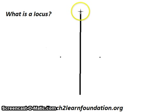You also may be asked to find the locus of points that is equidistant between two fixed points. Now, imagine that there is a line drawn between these two points, from here to here.